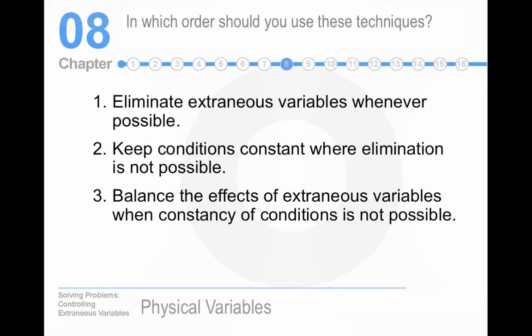Which order should you use? Elimination maybe first, because that gets rid of things that could be a problem. Then constancy of conditions, then balancing. Constancy of conditions is the most important because we literally don't know what we don't know — it eliminates confounds that we aren't aware of and haven't identified.